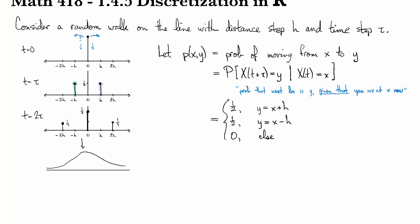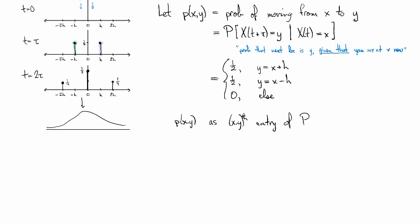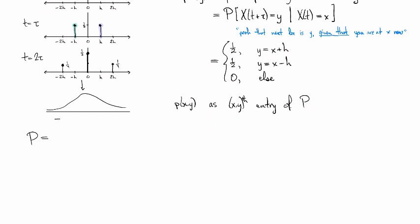That function is given by one-half if y equals x plus h, one-half if y equals x minus h, and zero for any other value of y. If we think of pxy as the xyth entry of some matrix P, then P looks like a big infinite by infinite matrix for the whole line. Coming down the diagonal, there's zeros, and then we have a one-half to the left and a one-half to the right of each one of these zeros.